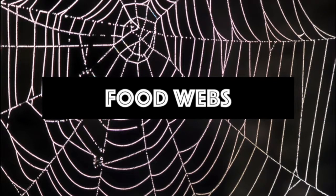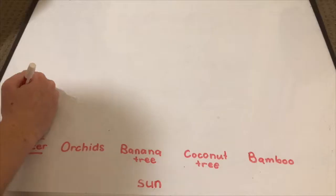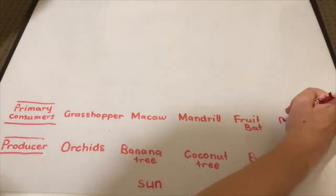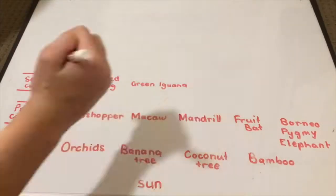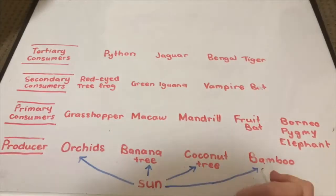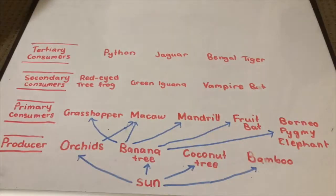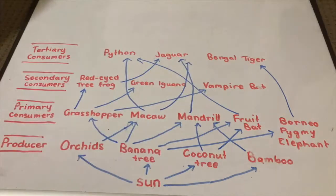In this food web there are four main trophic levels. The producers use photosynthesis to create their own source of energy. The primary consumers are various herbivores as well as some omnivores that feed on the producers. The secondary consumers feed on the producers and the primary consumers. And finally the tertiary consumers, which feed on the lower consumers.